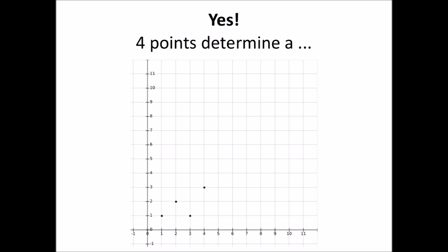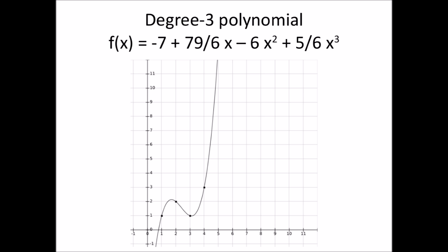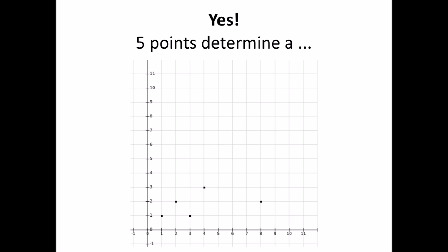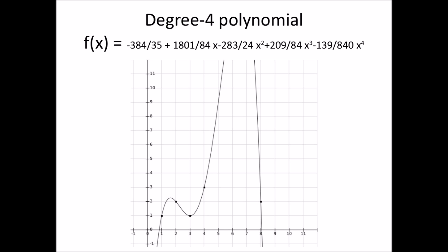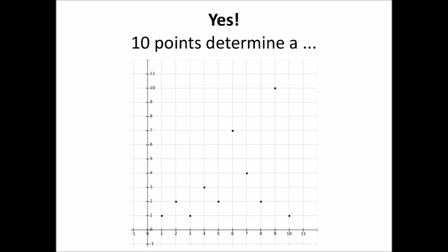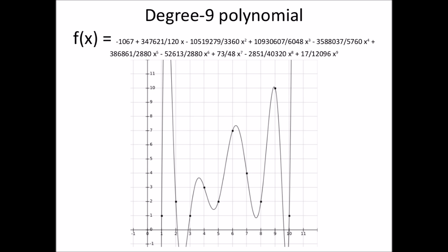So, if we take four arbitrary points, then they determine one unique polynomial of degree 3 — and it's this one here. If we take five points, they determine a polynomial of degree 4. And if we take 10 points, they determine a polynomial of degree 9. Clearly, this last polynomial is a little bit unreadable, but the important point is that it's just a polynomial of degree 9, and there is only one, and only this one, that visits all these 10 points.